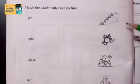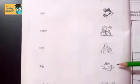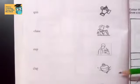What does spin mean? Spin means spinning. Now look at this picture to find something that is spinning. Yes, we have this top. This top is spinning. So we have to match these two: spin and this top.